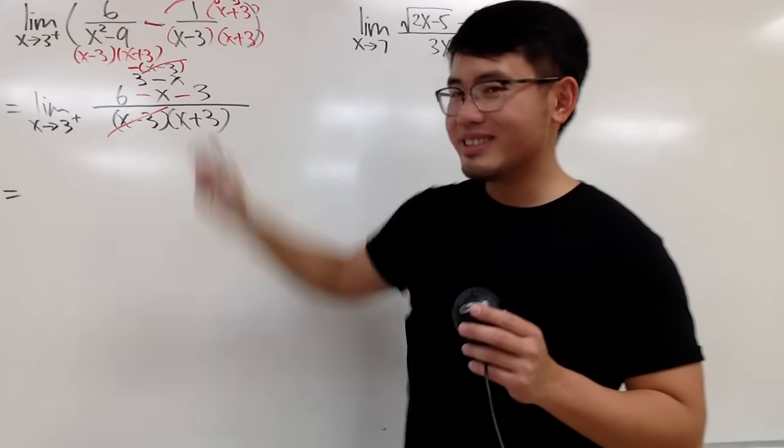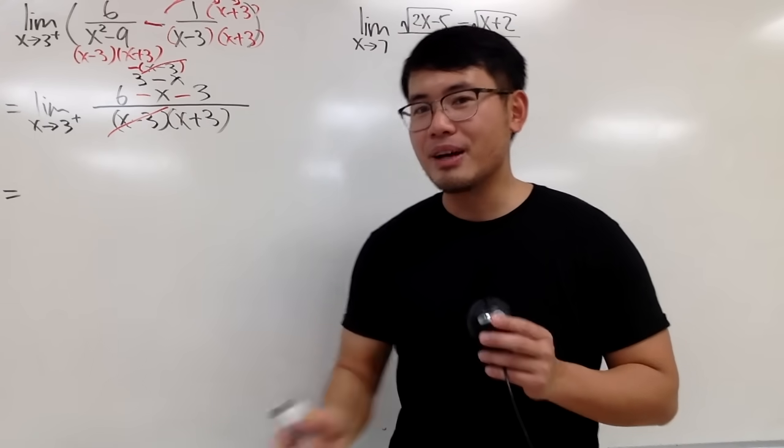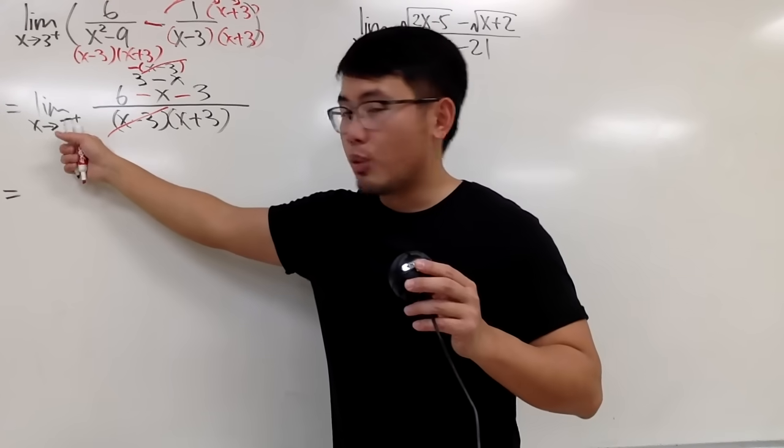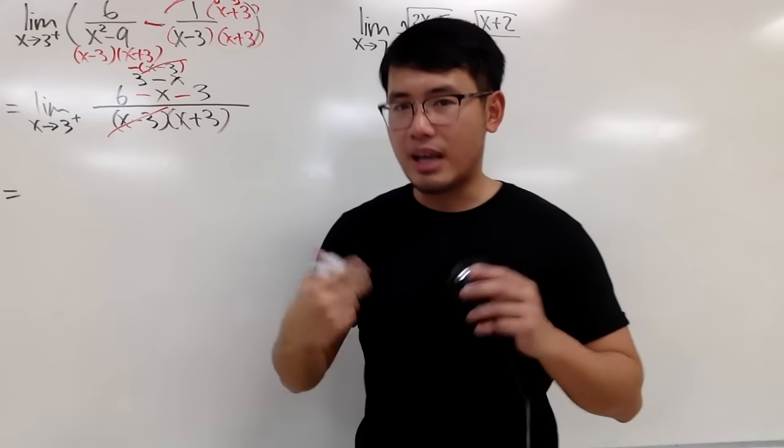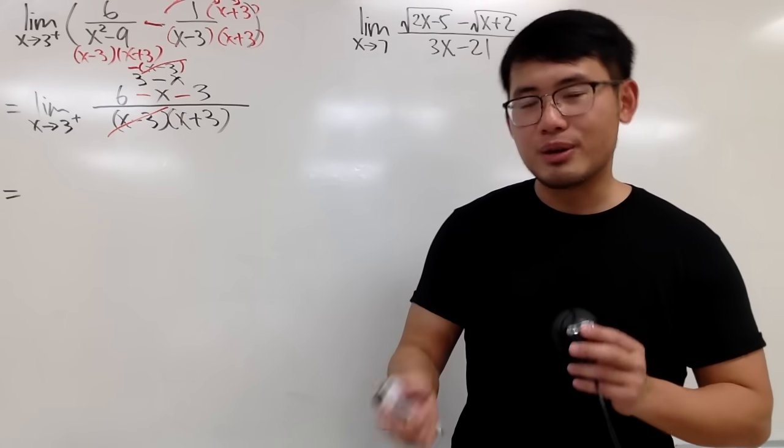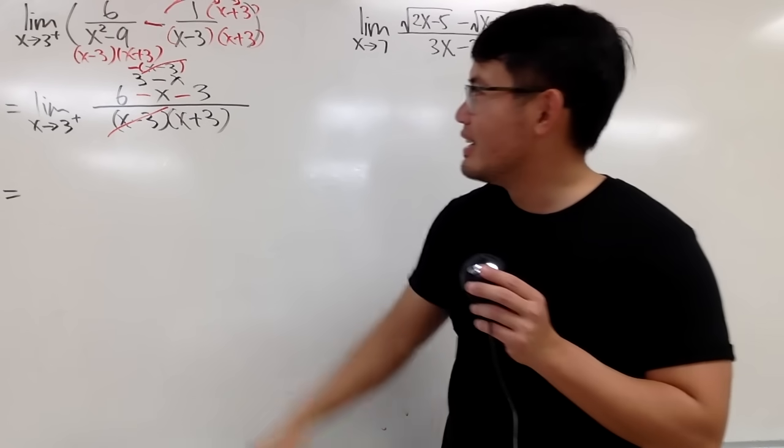And usually, when you cancel things out, that's the good thing that just happened. And then, you should plug in whatever this is into the x and compute it. If you get a nice number, that would be your nice answer.